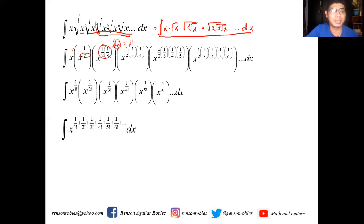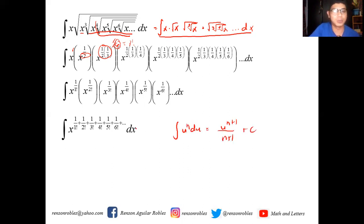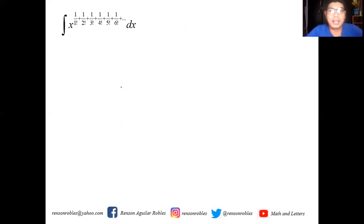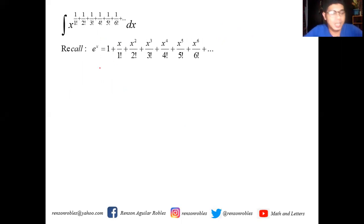Now, the power here is a constant, so we could use the integral power rule. However, this is a little painful on the eyes, so allow me to simplify further. We recall the infinite series for e to the x, the polynomial expansion of the transcendental function e to the x, which is equal to 1 plus x over 1 factorial plus x squared over 2 factorial plus x cubed over 3 factorial plus x to the 4 over 4 factorial, running until infinity.